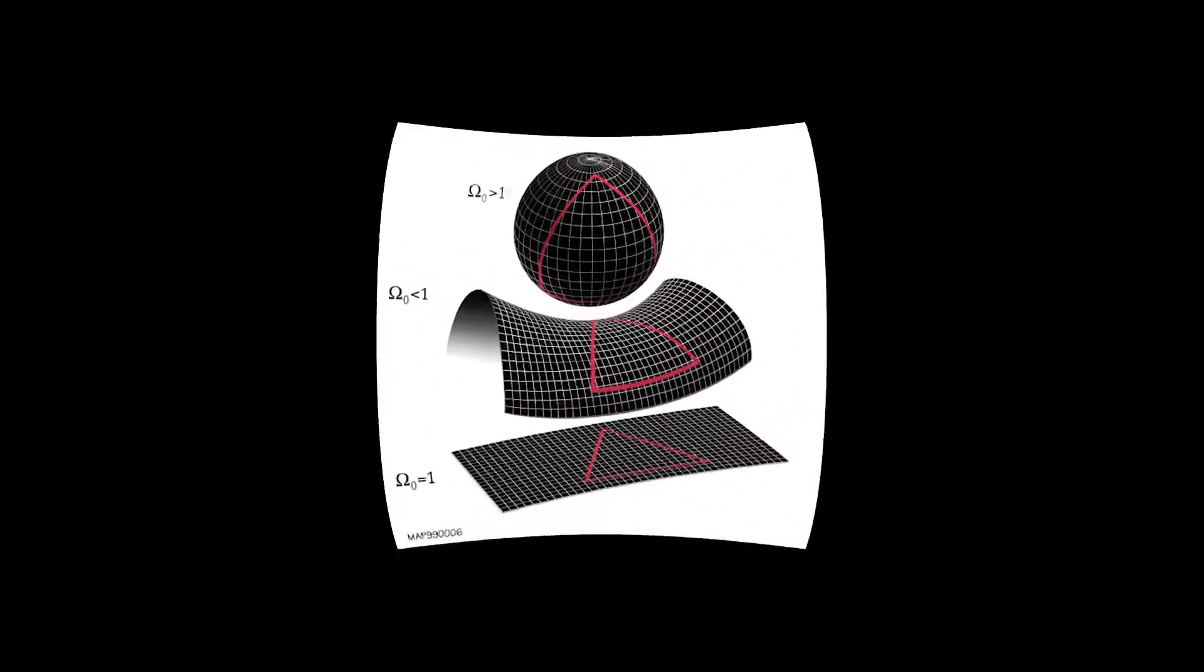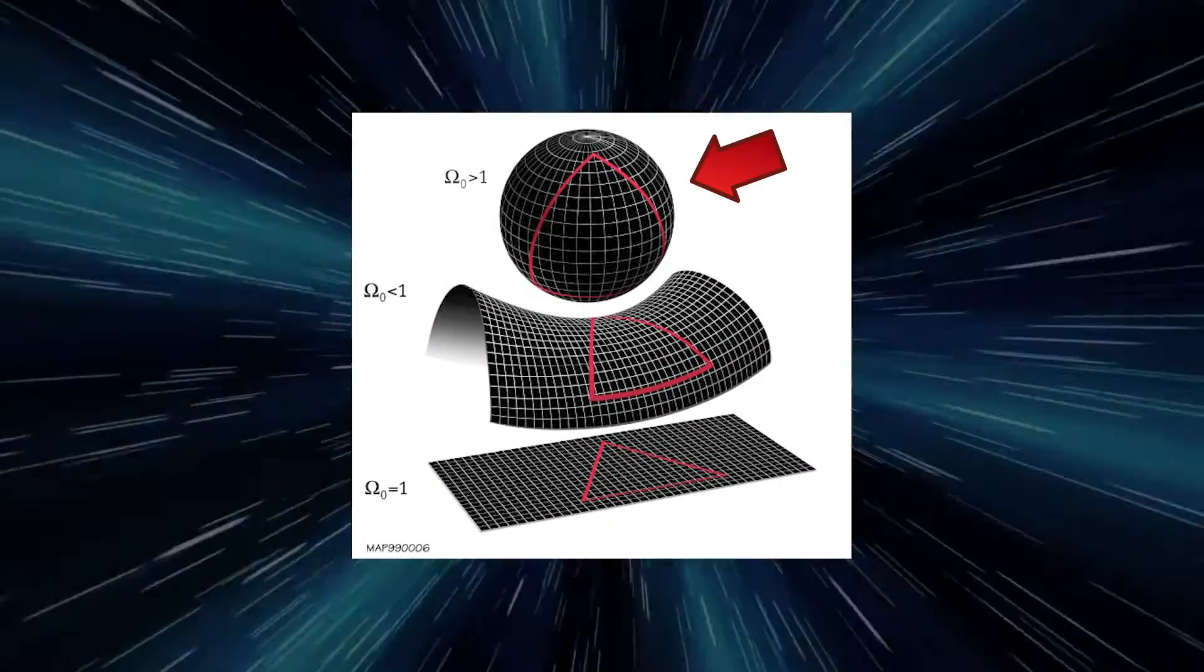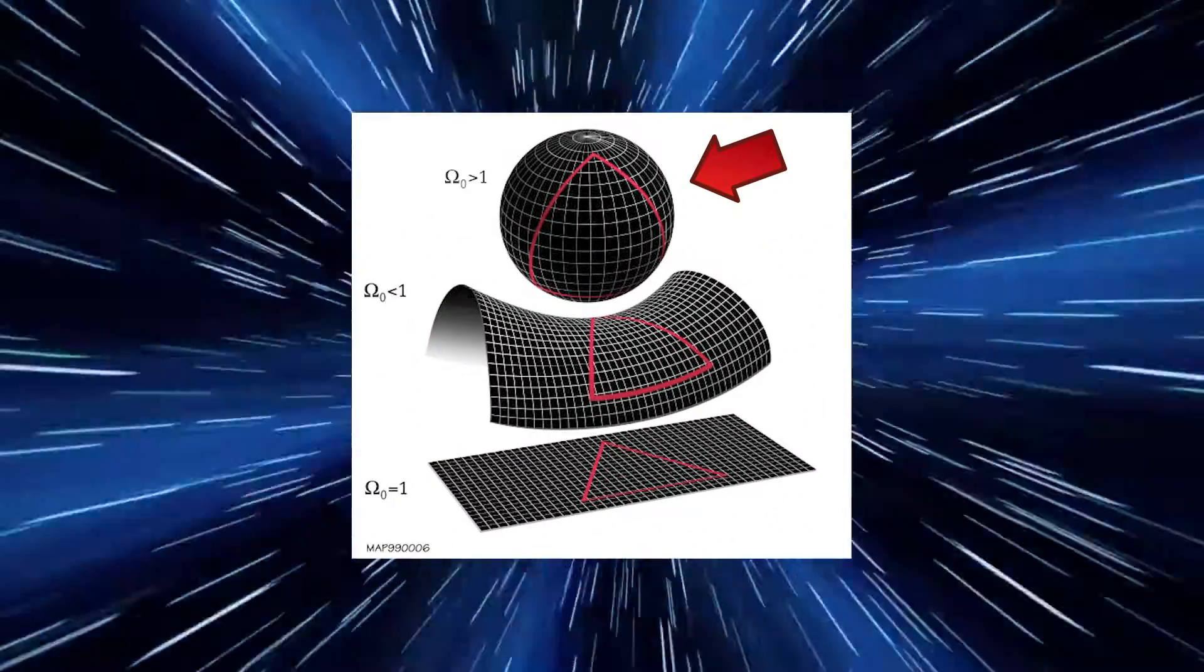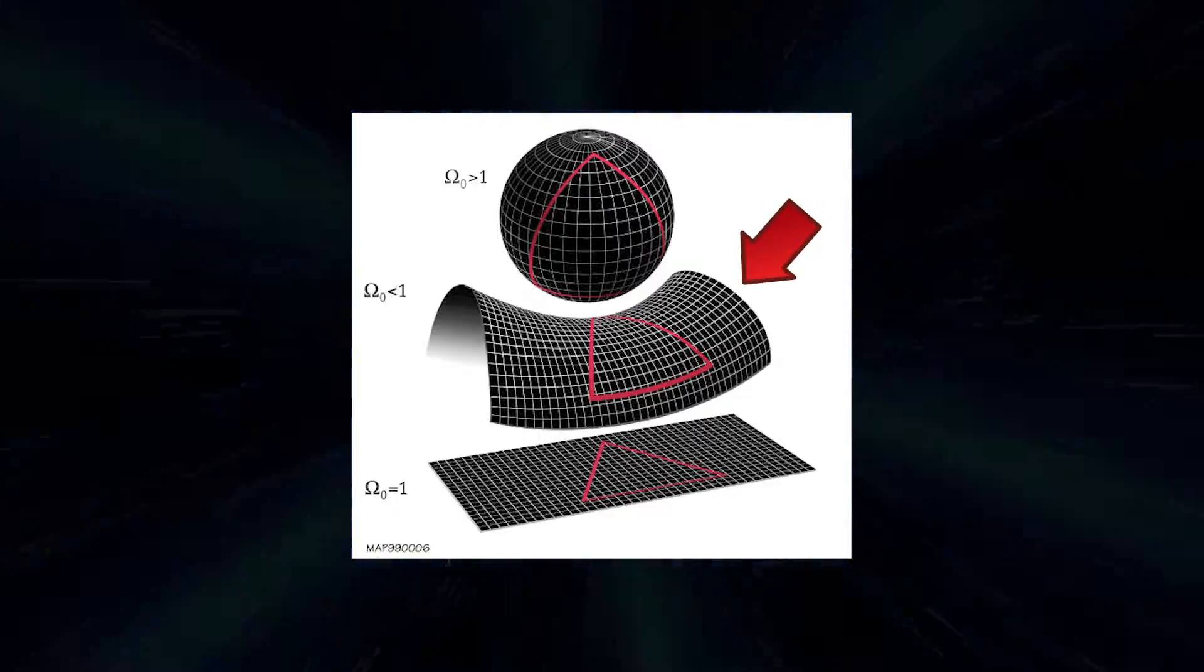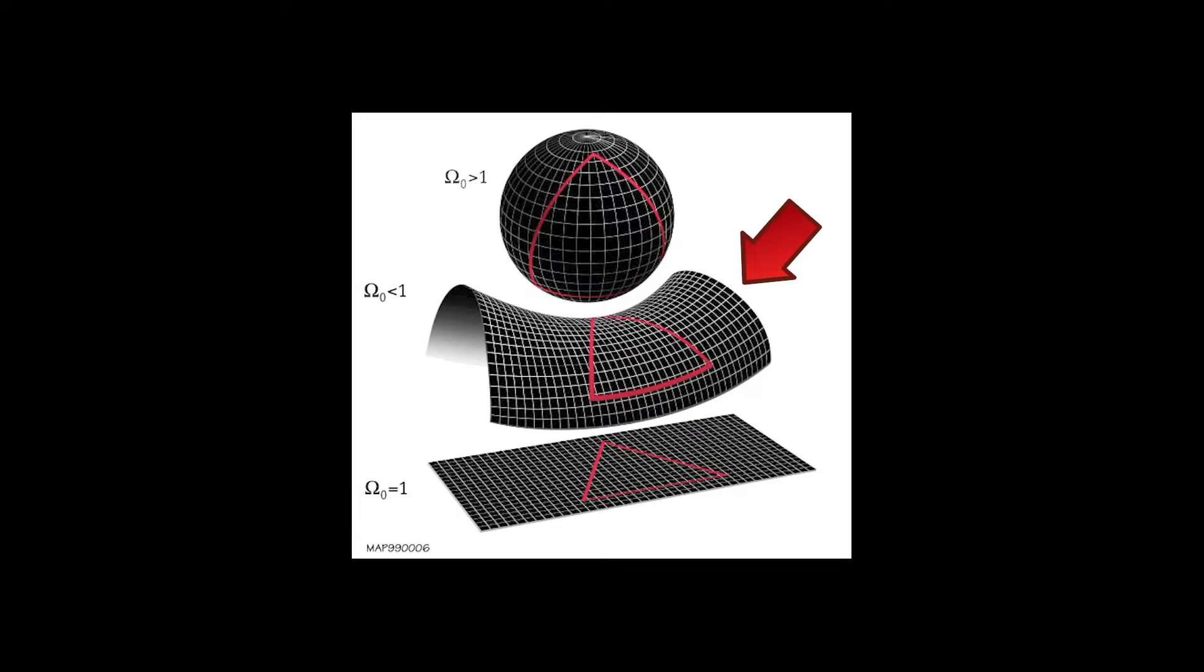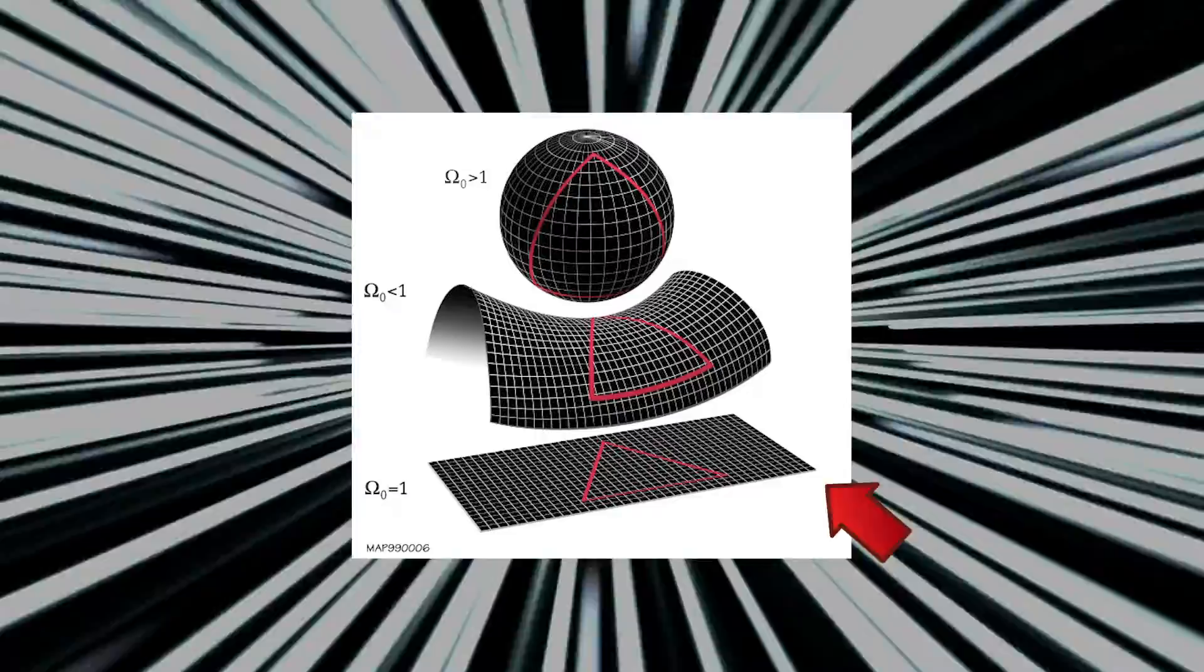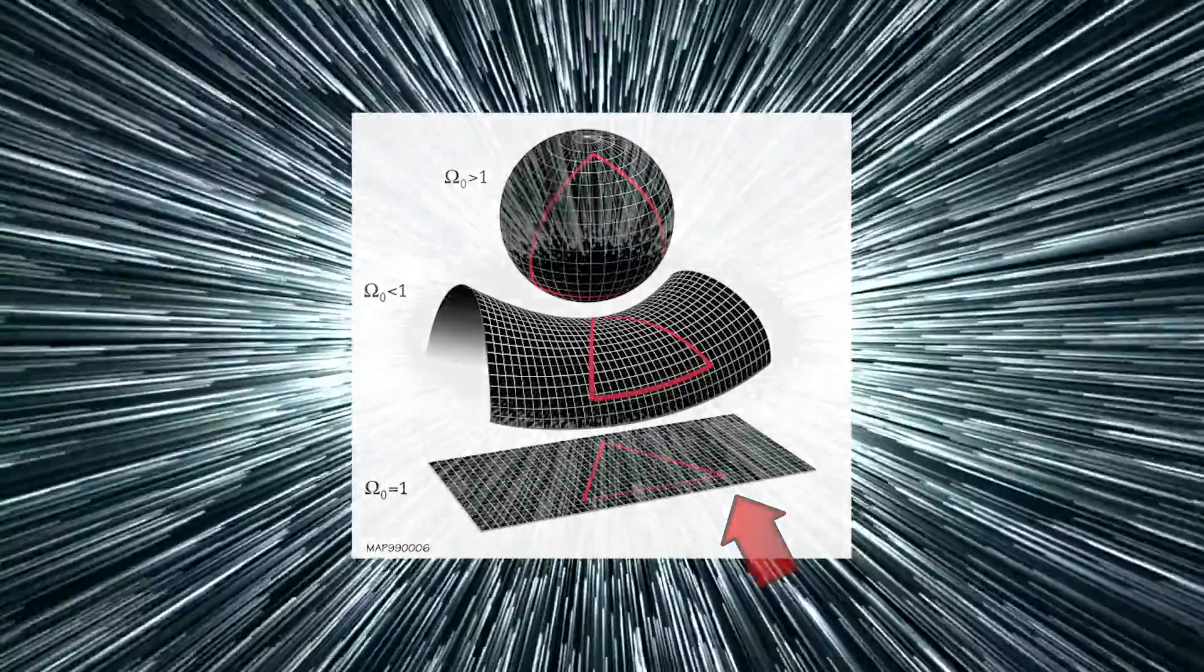If its density is greater than the critical density, the universe will be closed and form a curved shape. If less, it will curve a bit like a saddle. But if the actual density of the universe is equal to the critical density, as scientists think it is, then it will extend forever like a flat piece of paper.